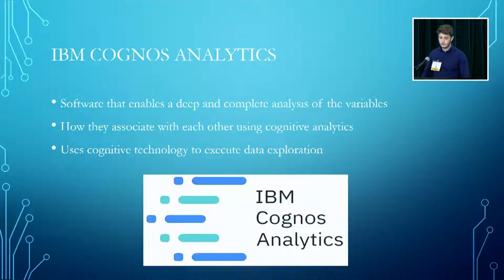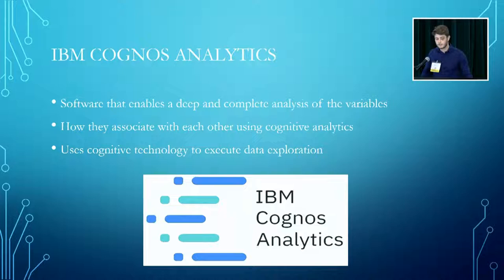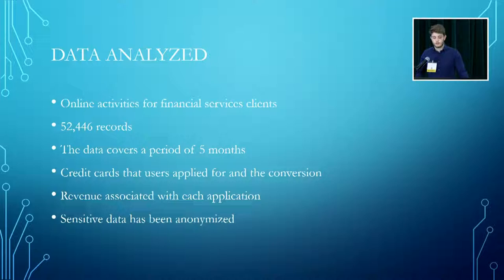To solve that problem, we're going to be using IBM Cognos Analytics, a software that allows us to make deep and complete analysis of the variables and shows how they associate with each other using cognitive analytics. The data we're analyzing comes from online activities for financial service clients. It consists of 52,446 records covering a period of five months, including credit cards that users applied for, the conversions when they actually bought the credit card, and the revenue associated with each application.